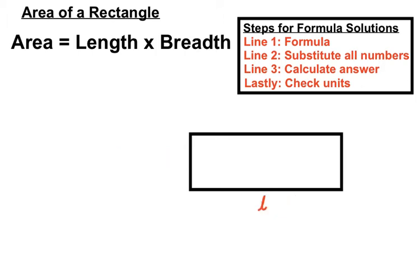If we call the length L and the breadth B, the shortened version of the formula for the area of a rectangle is A equals L times B, or A equals LB.